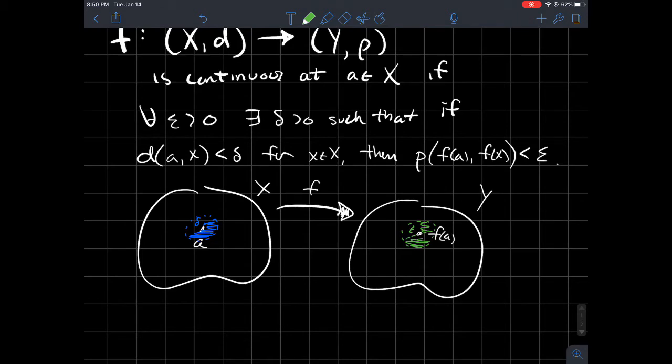We should be able to find a delta, there exists a delta small enough such that that whole ball back here in the domain gets sent inside of this ball over here.